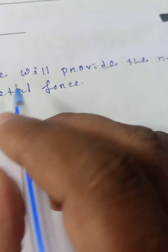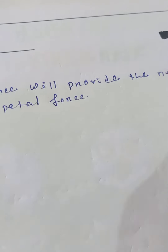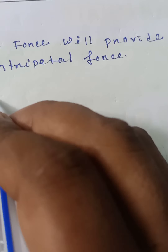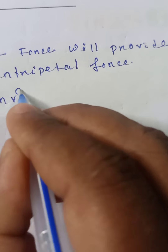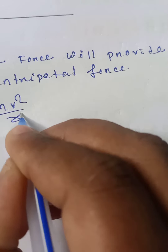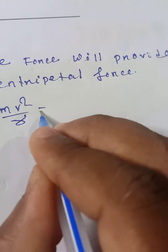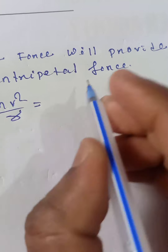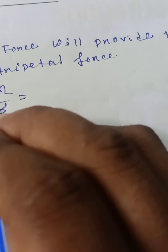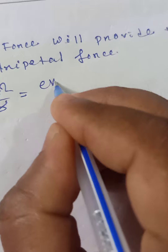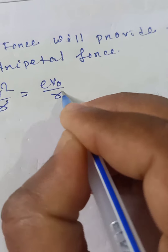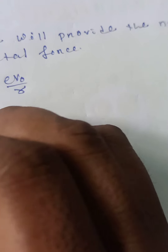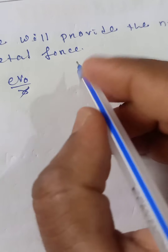The force will provide the necessary centripetal force. So mv²/r equals the electrostatic force eV₀/r. The r cancels, which implies mv² = eV₀.